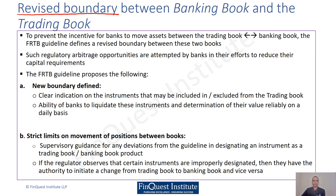FRTB comes down very hard on the idea of preventing regulatory arbitrage, so it will prevent the incentive for banks to move between these two books. Banks have historically tried to leverage regulatory arbitrage because if they're able to find such an opportunity, they will definitely go for it, as it frees up capital. FRTB will be very stringent on those conditions to prevent such arbitrage.